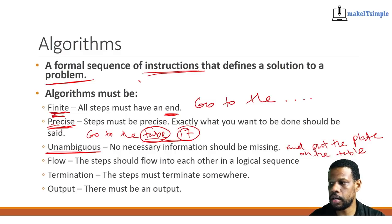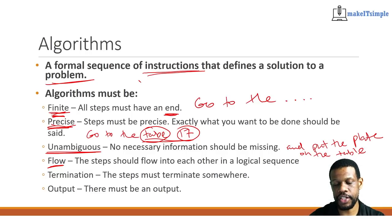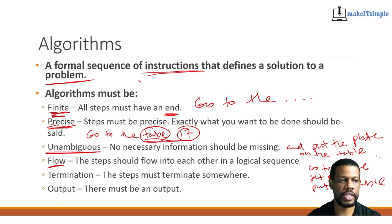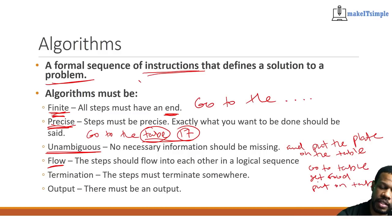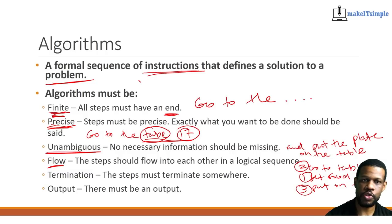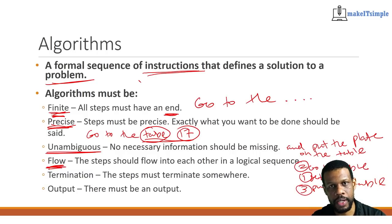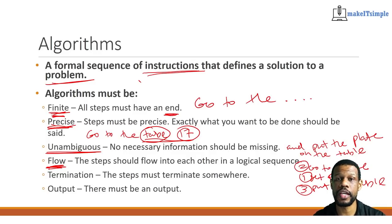It must flow. If the instructions don't flow and I say 'go to table, then get the food, then put it on the table' — I have a problem, because getting the food should be first, then go to the table, then put it on the table. If it doesn't flow, we have a problem because the computer will say that's not making sense. Remember, you're speaking to a three-year-old.